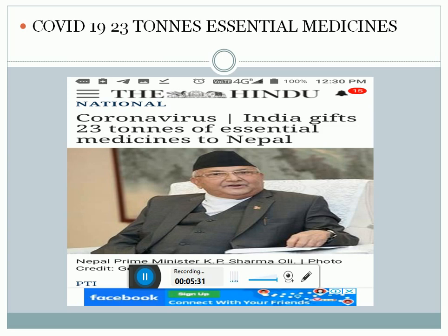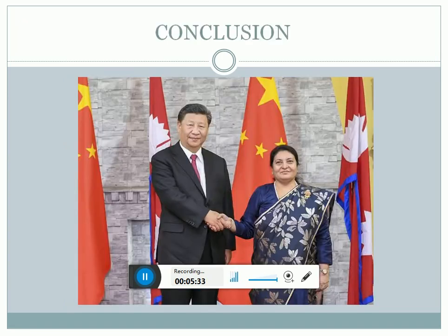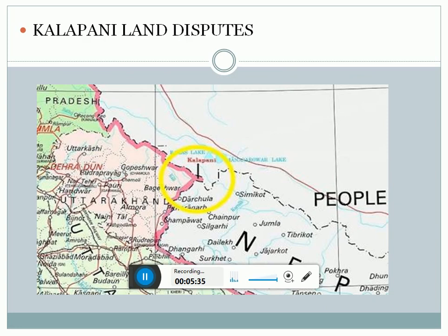Returning to the Kalapani land dispute — last year, when the reorganization of Jammu and Kashmir happened, a new political map was launched in January 2020, and that also covered the Kalapani area. Nepal had some issues with the map which was published in the month of January.